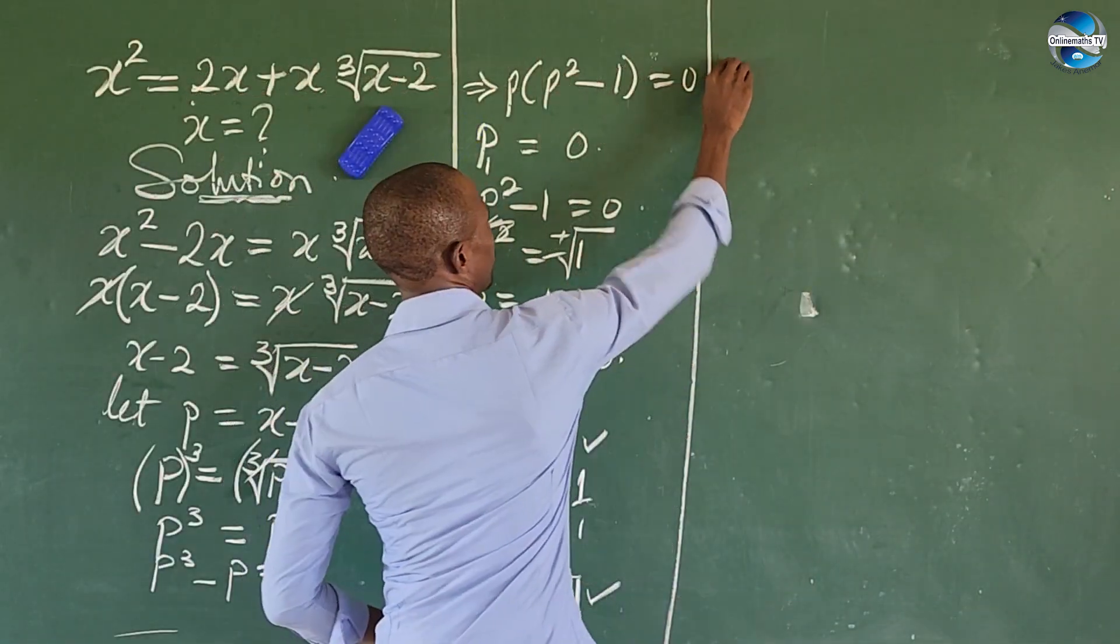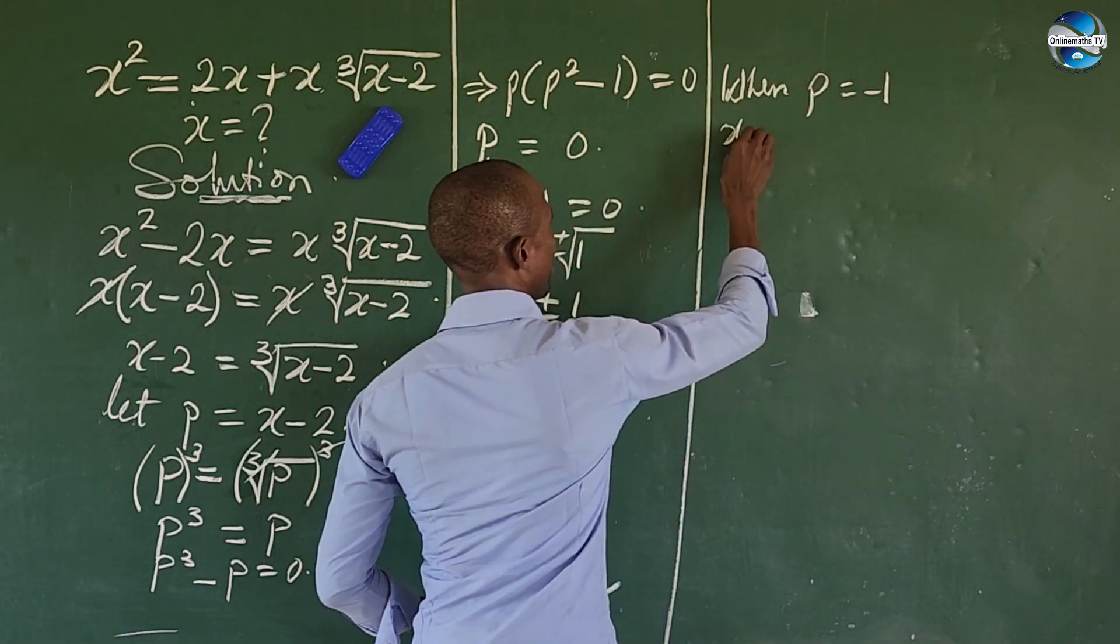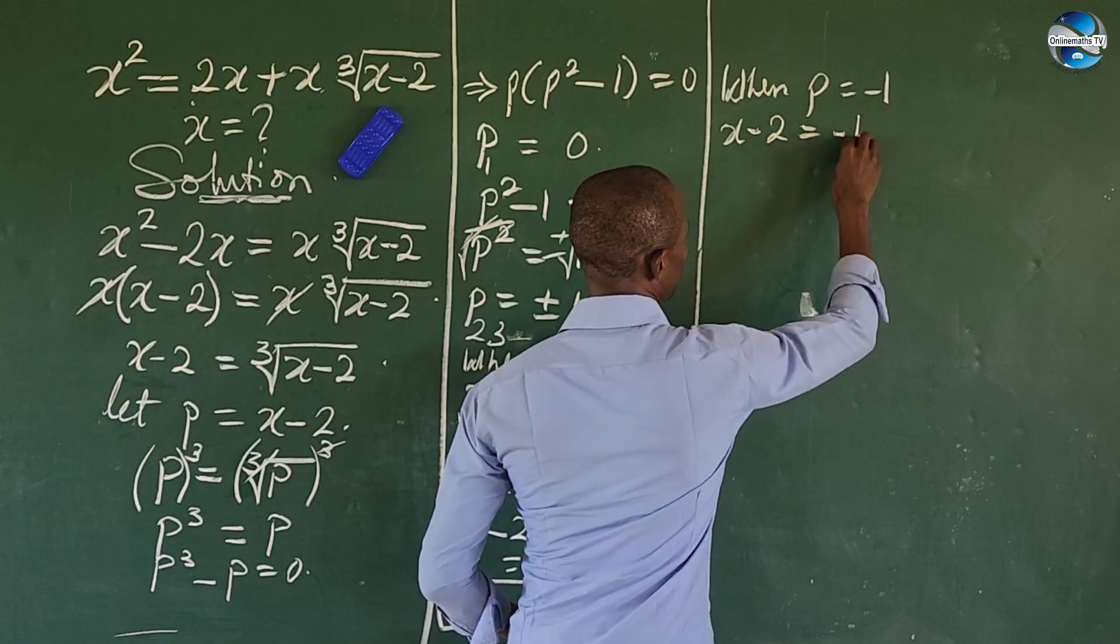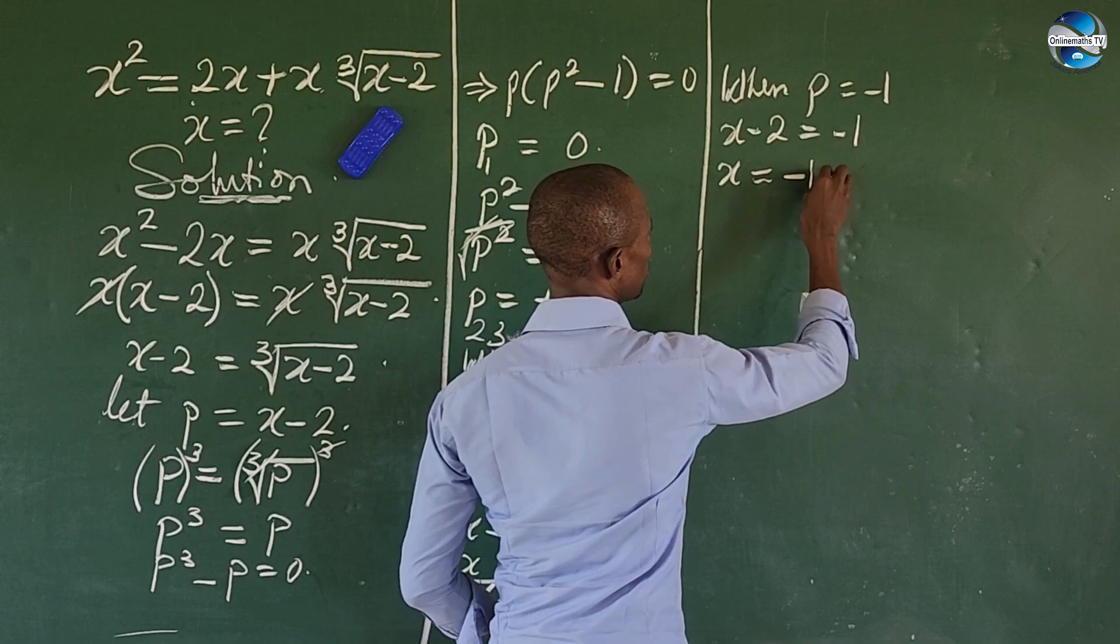Let's take the last case scenario. We'll have here: when p equals minus 1, we'll have x minus 2 equals minus 1.